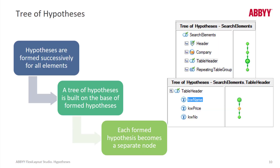We can see here a hypothesis tree where we find the header, the company, the table header, and a repeating group. If we double-click on the table header, we see that inside it we found the name and the number, but we did not find the price. There is just one hypothesis tree here, so that is going to execute quickly without any unnecessary branching, which we are about to talk about.